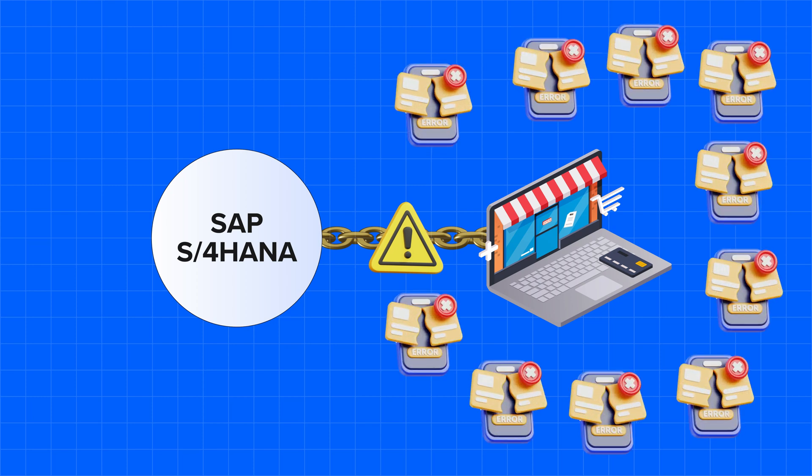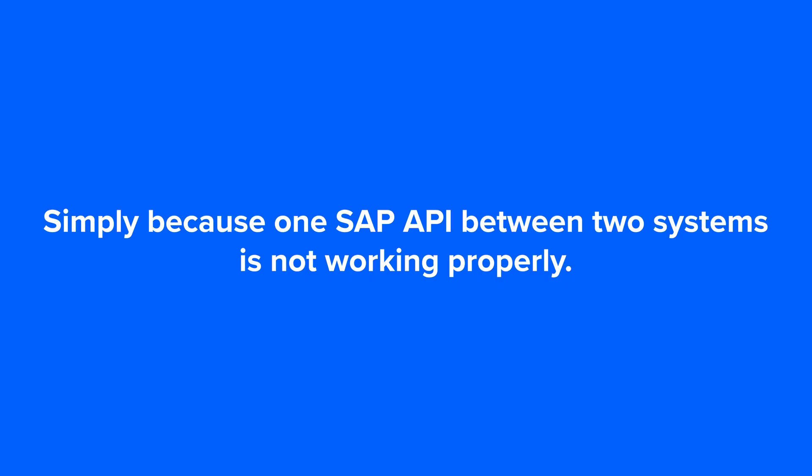And now, because of this very reason, thousands of your e-commerce transactions are not getting processed correctly — simply because one of the SAP APIs between two systems is not working properly. You can argue that from the business continuity standpoint, there is nothing worse for a large enterprise than losing the ability to sell, to buy, or to ship.